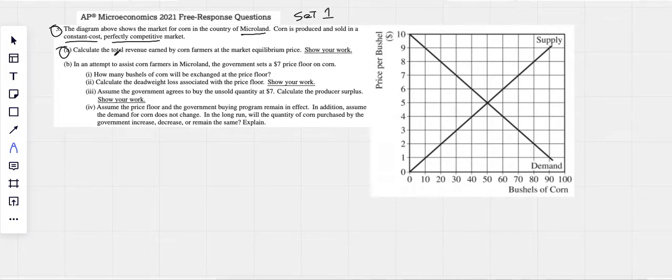They want us to calculate the total revenue earned by corn farmers at the equilibrium price. So we know our equilibrium price is where supply and demand come together. So it looks like the price of the market is $5. We know that at $5, the quantity sold and purchased would be 50. So this is the quantity that the market would now buy. They are asking about total revenue. We should know that total revenue is simply price times quantity. At a price of $5 and a quantity of 50, we can see our total revenue is $250. Hopefully we can see that. Dollars is obviously the value there.